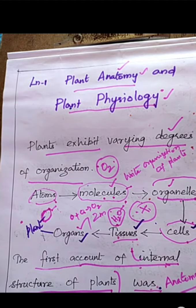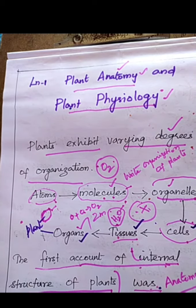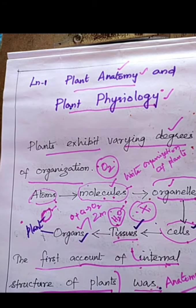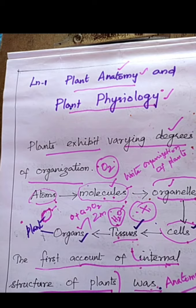Plants exhibit varying degrees of organization. That means the plant body is made up of different levels of organization. The plant body is made up of many atoms, molecules, organelles, then cells, tissues, and different organs — all these together form the plant body.